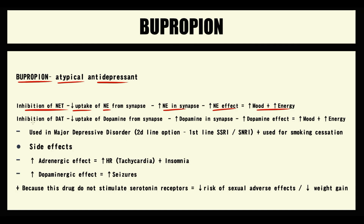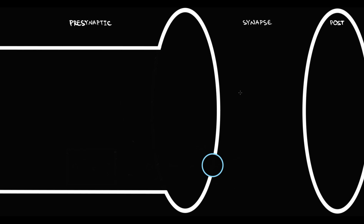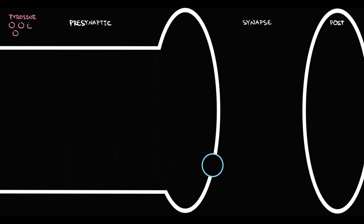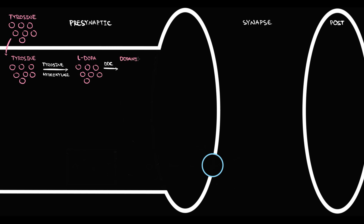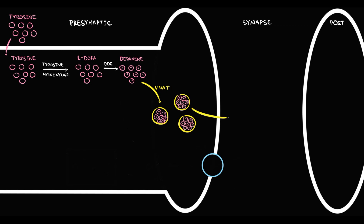Bupropion also inhibits the function of the dopamine transporter. To explain this we have to know how dopaminergic neurons work. We have a presynaptic neuron, synapse, and postsynaptic neuron. Dopaminergic neurons uptake tyrosine. Once tyrosine appears inside the neuron, it undergoes hydroxylation by the rate-limiting enzyme tyrosine hydroxylase with formation of L-DOPA. Then L-DOPA by DOPA decarboxylase is converted to dopamine. Once dopamine is formed, vesicular monoamine transporter puts dopamine inside the vesicles where it is stored, until depolarization occurs.